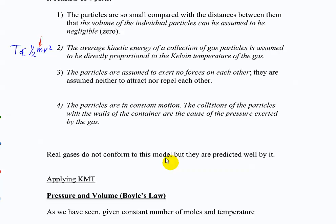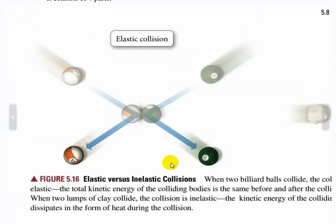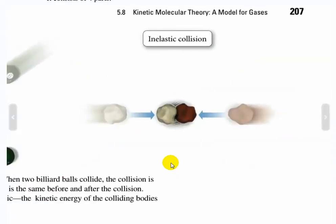One more thing that wasn't mentioned: all collisions are assumed to be elastic. That means they don't stick together — they bounce off each other. An elastic collision is like two billiard balls hitting and coming apart without transferring or losing any energy in the process. An inelastic collision is like two piles of clay smashed together that dissipate some energy as heat. So an elastic collision means none of the energy is lost or transferred when atoms collide.